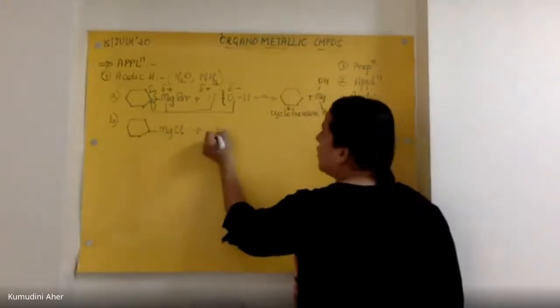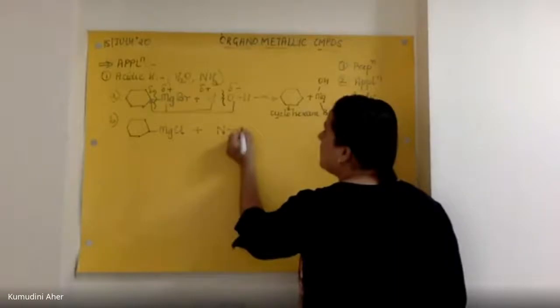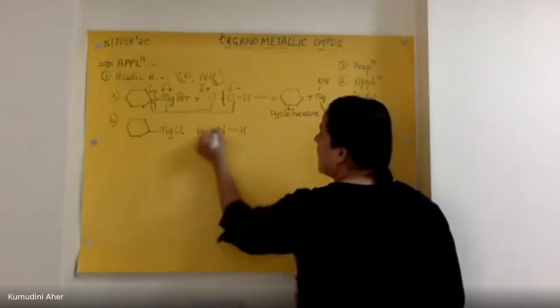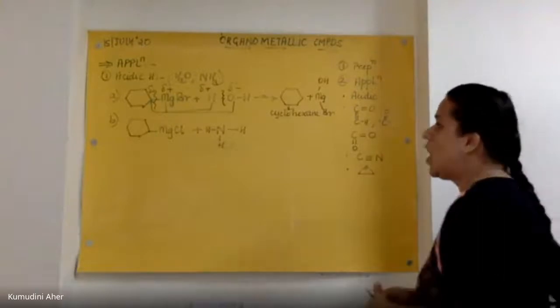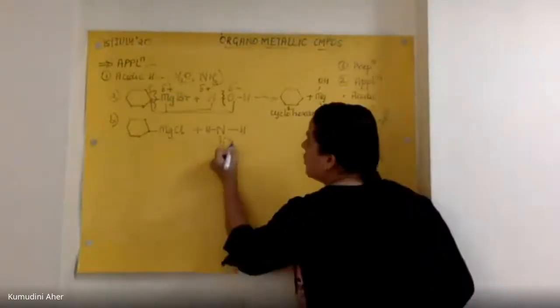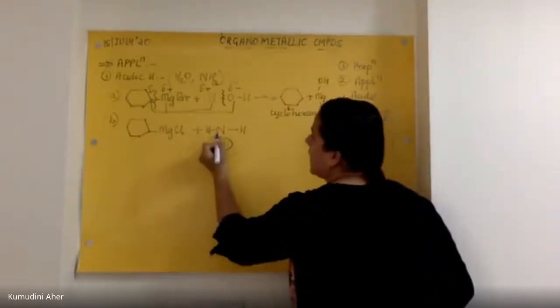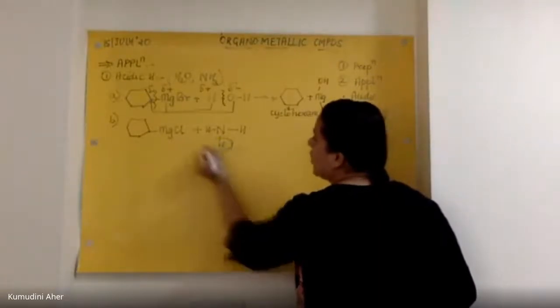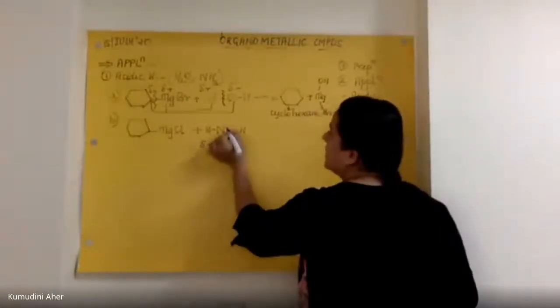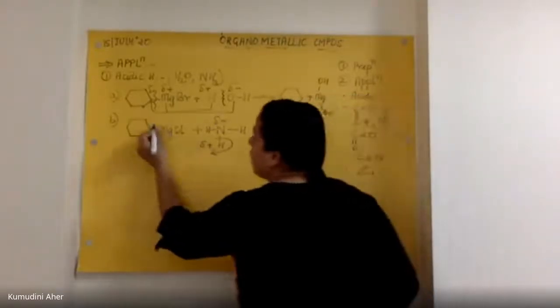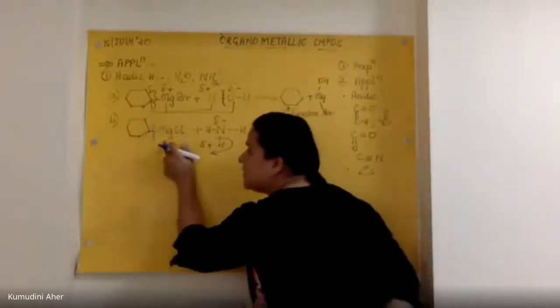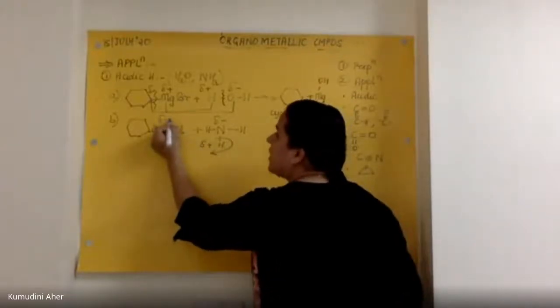Now, I am taking your ammonia. Ammonia is basically NH3 - NH and H. This is your ammonia. Now, what happens? One proton will go. This bond breaks. This is going to take all the delta positive charge. Nitrogen will have minus charge. This bond breaks.